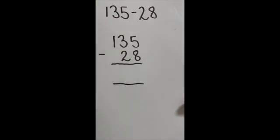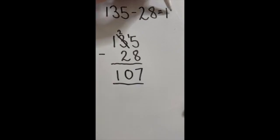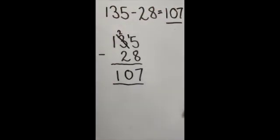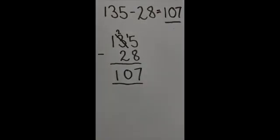If I do five take away eight, I can't do it. So what people sometimes do is they decide the difference between eight and five is three and they put the answer in there. We can't do this. Whenever the number on the top is lower than the number below, you must borrow from next door. So if I cross out that three, it becomes a two, and I carry my one next door. 15 take away eight is seven, two take away two is nothing, one take away nothing is one. So my answer is 107.